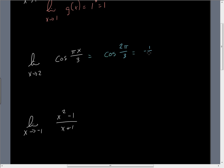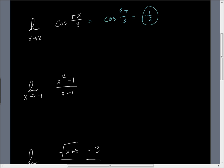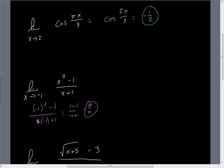For a slightly different technique, if we use direct substitution here, we get negative 1 squared minus 1 over negative 1 plus 1, which is really 1 minus 1 over negative 1 plus 1, giving us 0 over 0. So we have a problem.